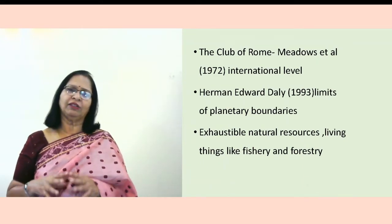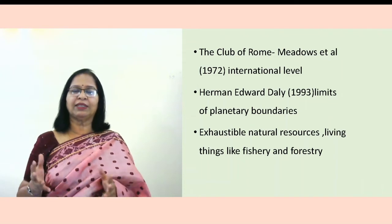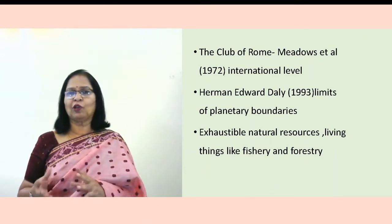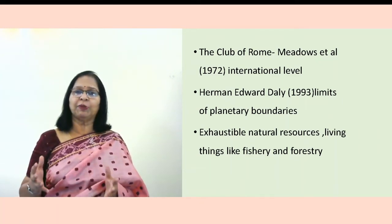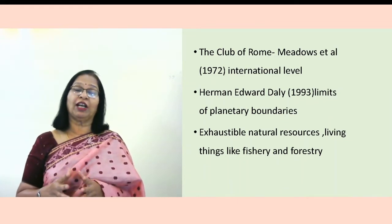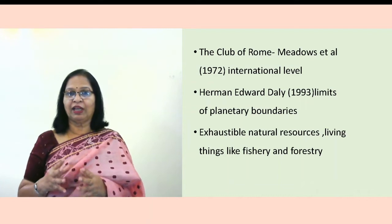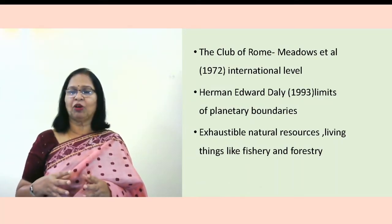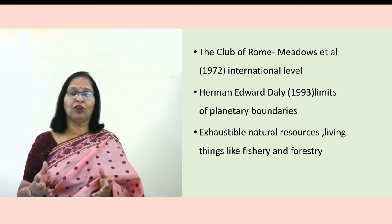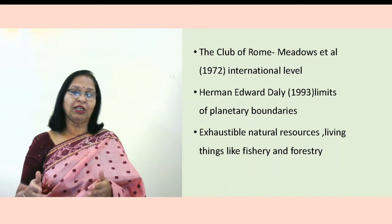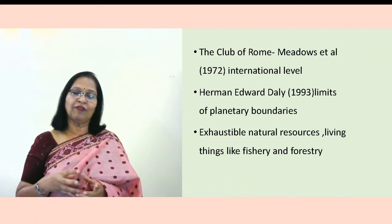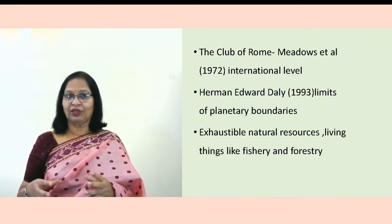By this time, economic and environmental issues were quite highlighted. A group of thinkers, writers, philosophers, lawyers, economists, scientists, and businessmen met in Rome — called the Club of Rome — where they discussed environmental issues for the first time at the international level. Herman Daly then talked about planetary boundaries, saying there must be a limit to economic activities. Finally, writings also emerged relating to natural resources such as living things — forestry and fisheries.